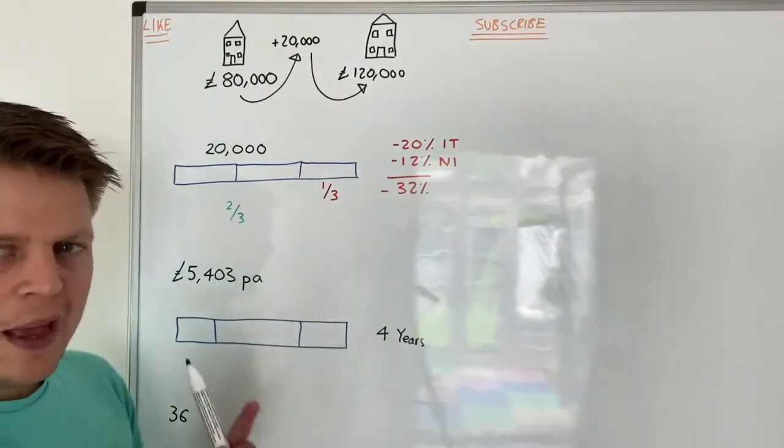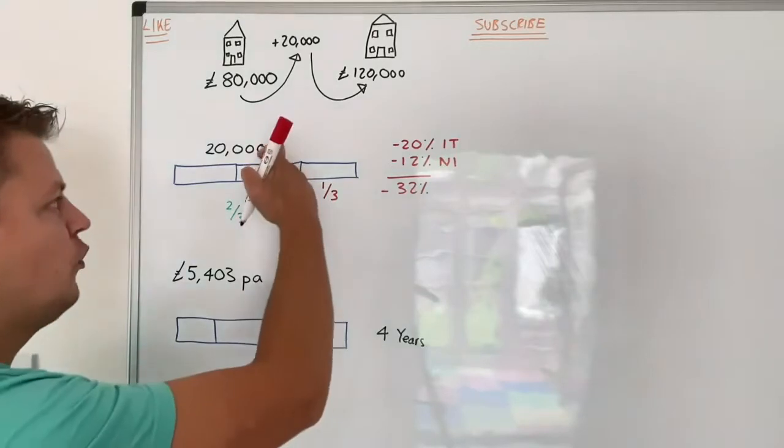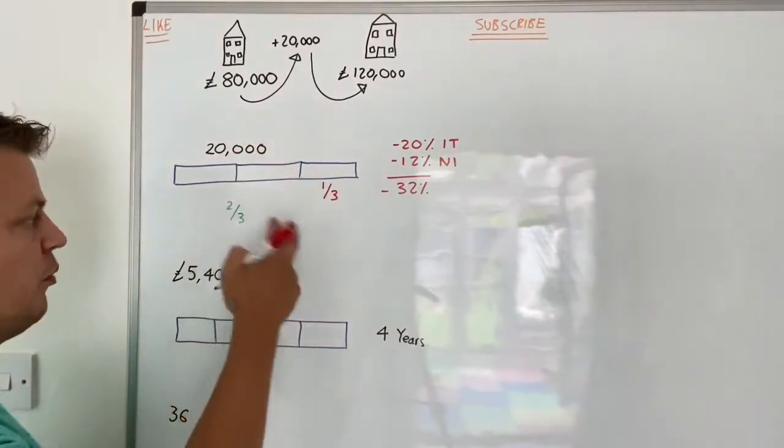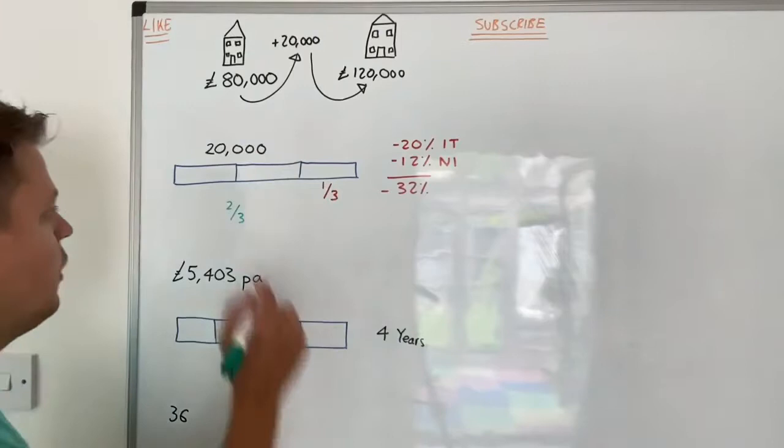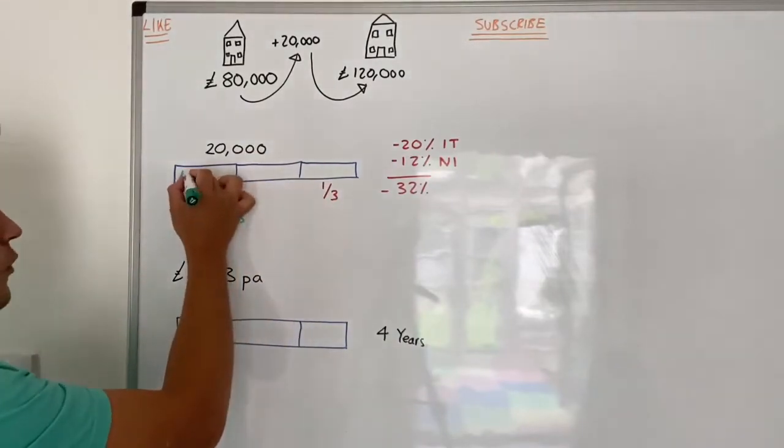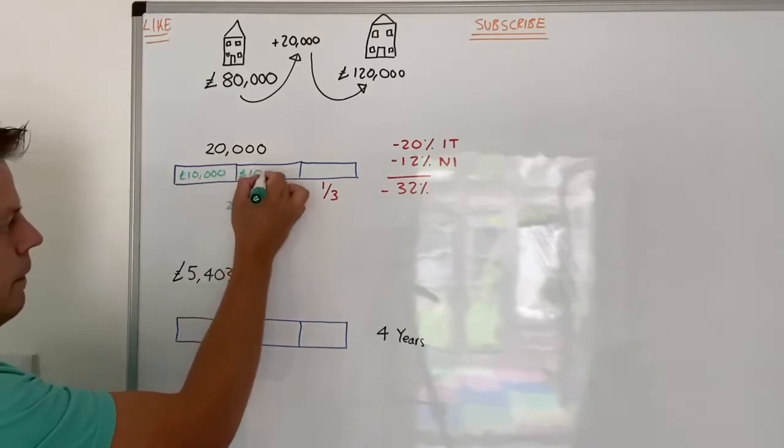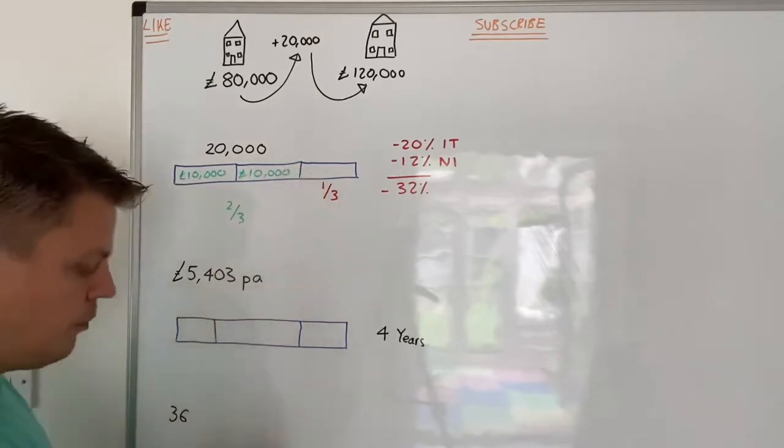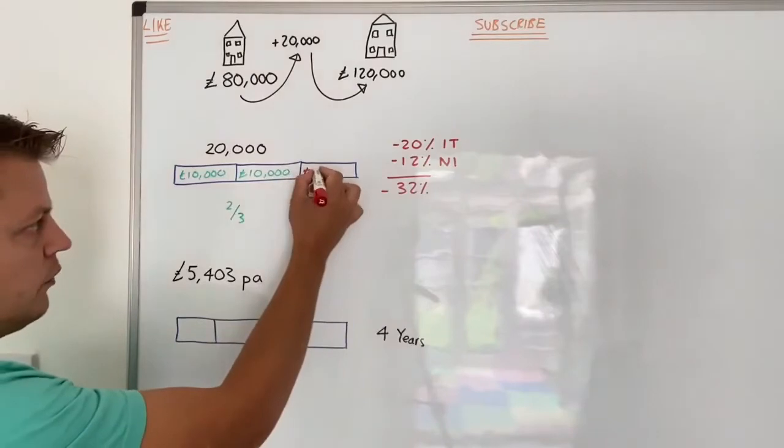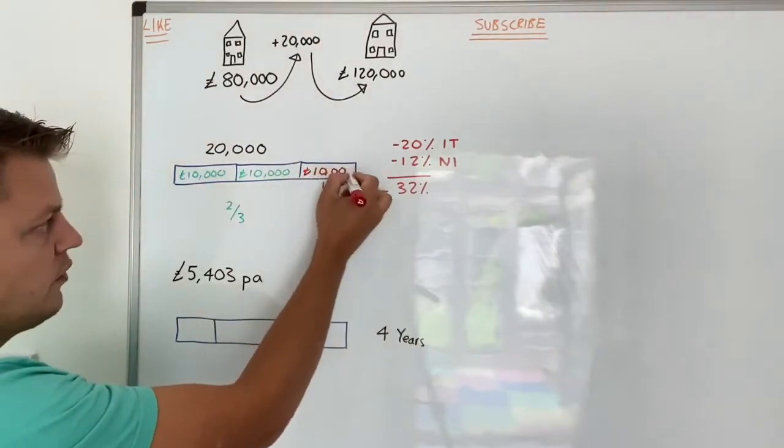For every pound you earn, 32 pence goes in taxes and 68% comes to you. Or we could say one third goes in taxes and two thirds comes to you to spend. So the question is: how much do I have to earn to bring £20,000 home, or two thirds of my income?